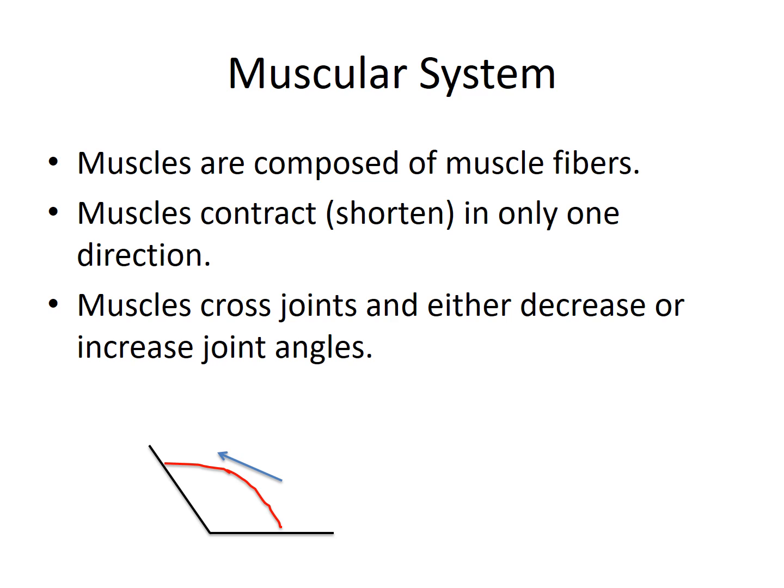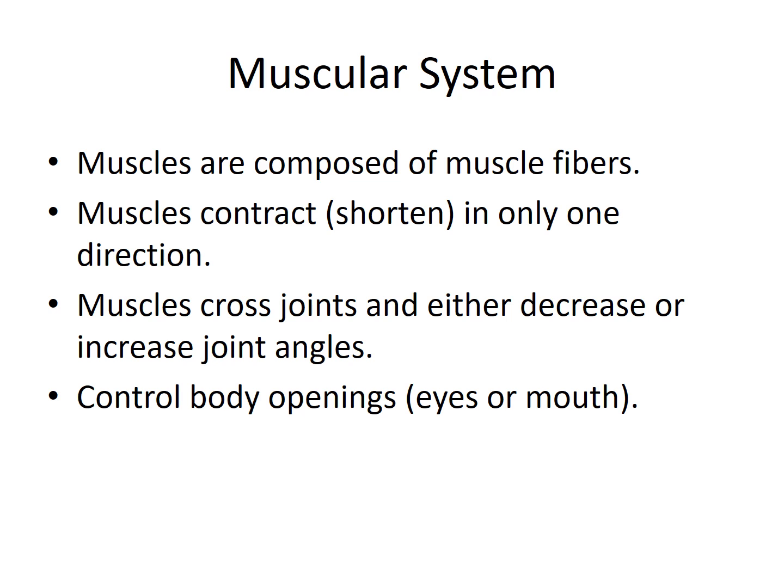We have a schematic of a muscle here. The arrow represents the muscle contracting and pulling in that direction, resulting in a decrease in the joint angle when the muscle contracts. Muscles are also involved in body openings such as our eyes and our mouth, and we'll go into more detail later in the semester about what type of muscles those are.